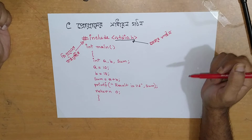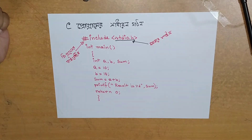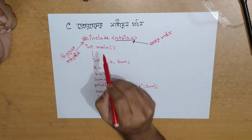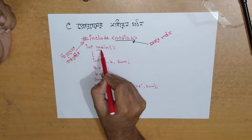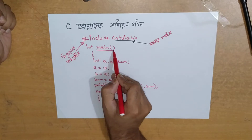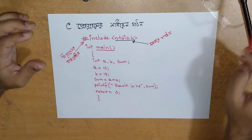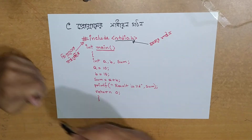The header file and Pre-Processor Directive are processed when the program starts. Now we look at the main function — main is the entry point of a C program.